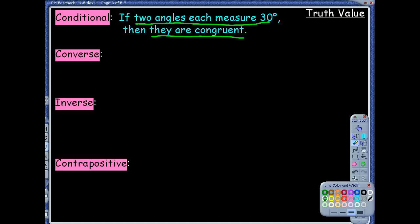What is a converse? You take the conditional and switch the if-then parts — you take the hypothesis and switch it with the conclusion. It still has the words if and then. So the converse would say: if they are congruent — but you can't really start with 'they,' so what are they? Two angles. So: if two angles are congruent, then they each measure 30 degrees. You don't ever start with a pronoun until you know what it's talking about, so if the two angles are congruent, then they each measure 30 degrees.